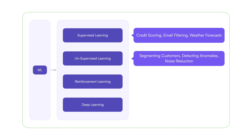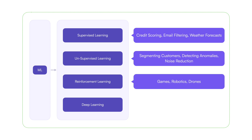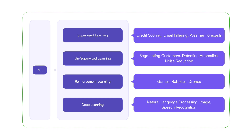Reinforcement learning is used in gaming, robotics, and even in drone development. Deep learning is used in natural language processing, image, speech, and other recognition tasks. In real-world applications, there will actually be a combination of one or more of these learning techniques used together.